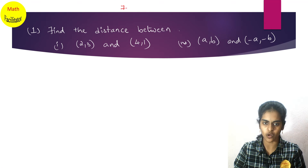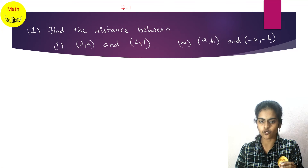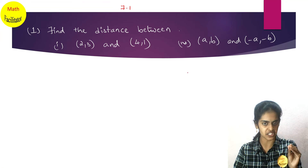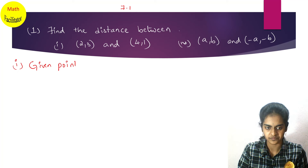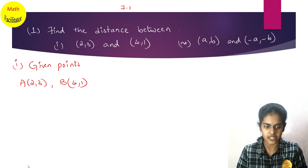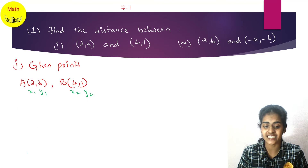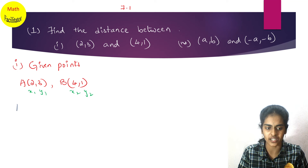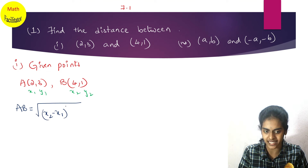Starting from the basics: in exercise 7.1, the first question is to find the distance between two points. I have picked important questions from the exercise. The first question: find the distance between A(2, 3) and B(4, 1). In your examination, immediately mark these as x1, y1 and x2, y2 respectively. The distance formula gives: under root of (x2 minus x1) whole square plus (y2 minus y1) whole square.